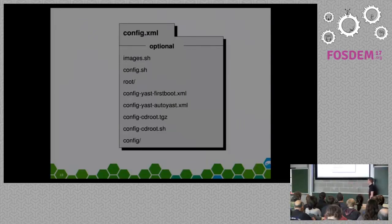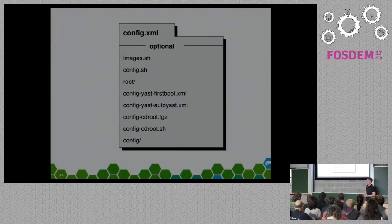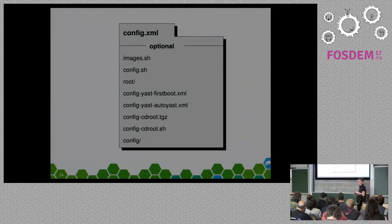This is basically an image description. The most important file is the config.xml, which is a configuration file containing all the stuff I already mentioned. Then you have images and config shell scripts, which are two shell scripts which get executed. And then you have a root directory which just gets copied over your root directory, and you can use it to override files.